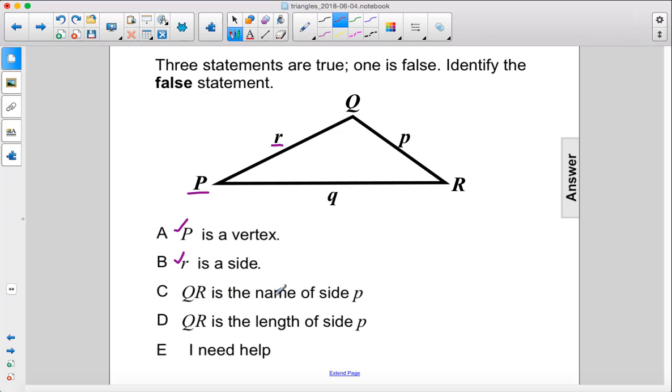QR is the name of side P, or is QR the length of side P? Well, QR is the length of side P. QR with a line segment over it would be the name of side P.